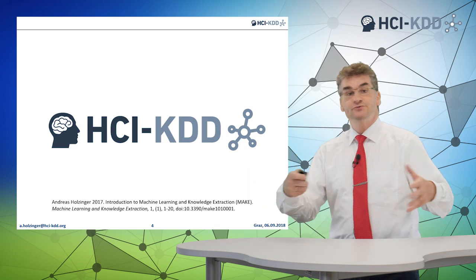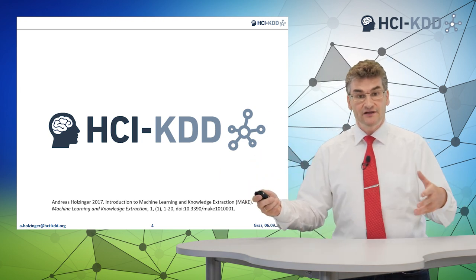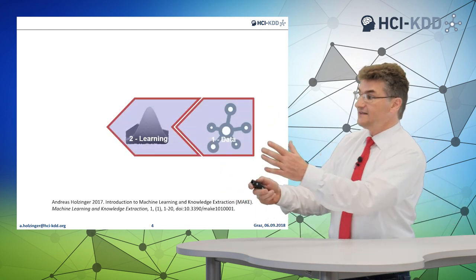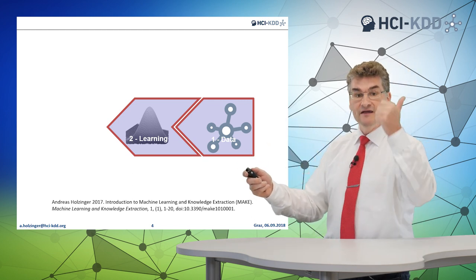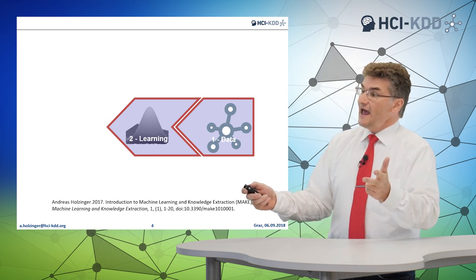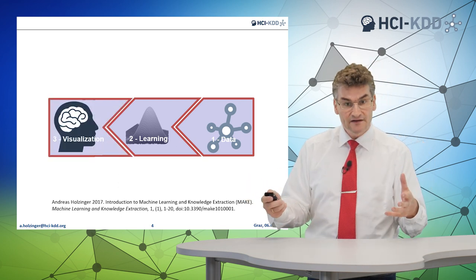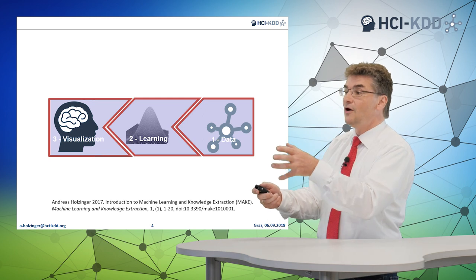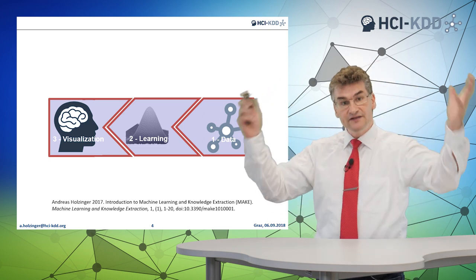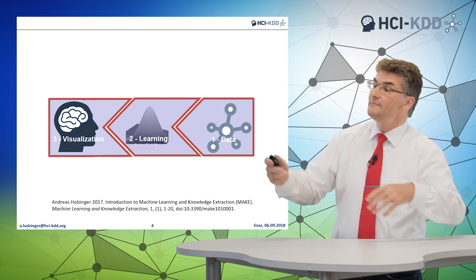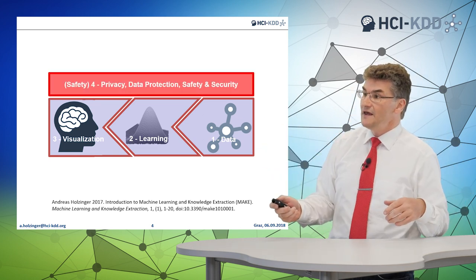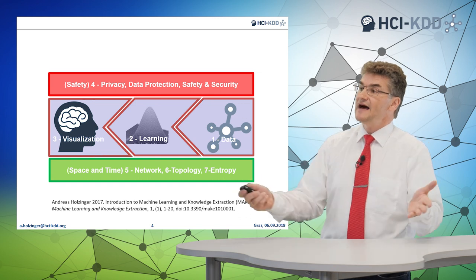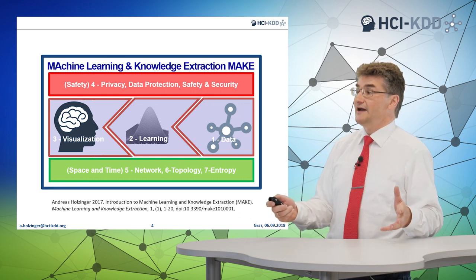To deal with such problems, we follow an integrated machine learning approach. That means we do algorithm development at the core, but before that we spend significant time on data mapping, data fusion, and data integration. At the end of the day, we have a customer — a medical doctor or a biological researcher — and we have to bring results from arbitrarily high-dimensional spaces down into lower dimensions to make them accessible for the human. And we always have to deal with privacy, data protection, safety, and security. This makes up the machine learning and knowledge extraction pipeline.